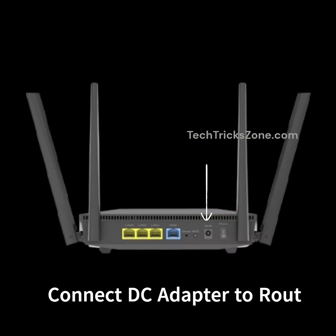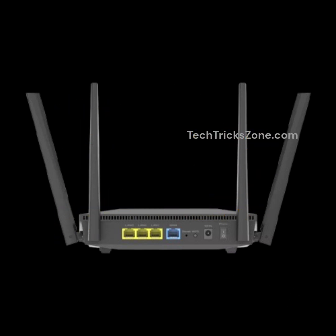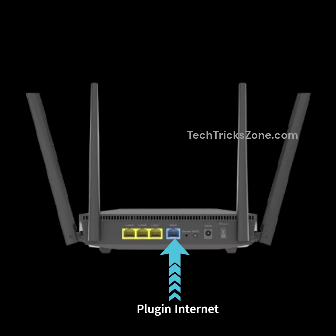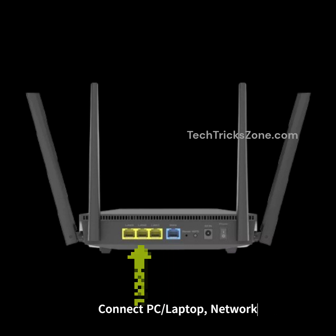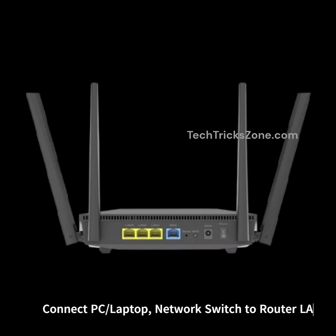Connect the power adapter to the router and power it on. Plug in the internet cable to the WAN port. Connect your PC, laptop, or network switch to the router's LAN port.